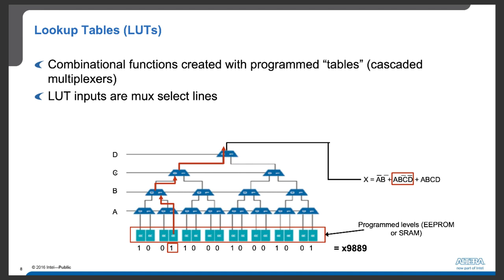If you know the basics of logic design, you can use the inputs of this lookup table to build a logic function. We can use the values in these registers to build an arbitrary combinational logic. For example, if we have the hexadecimal value 9889, written in binary as 1001 1000 1000 1001 in these 16 registers, then using the inputs to this LUT we can derive the output as A-bar·B-bar, or A·B·C-bar·D-bar, or A·B·C·D — where these are AND operations.